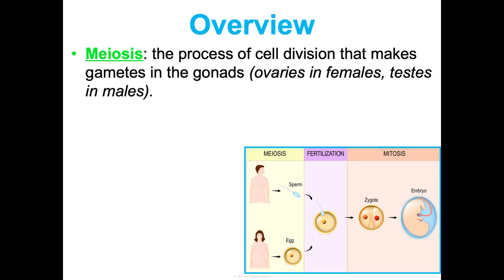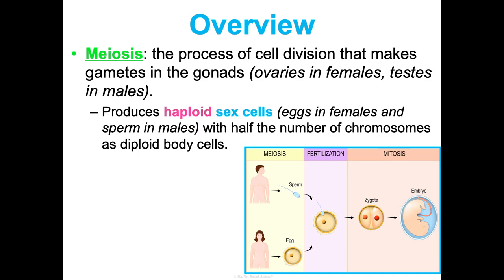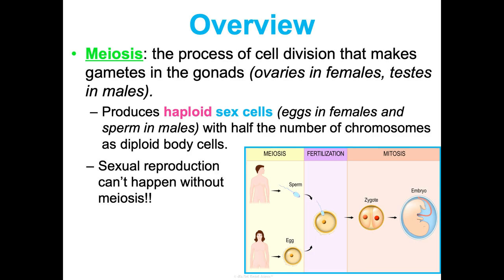Here's our overview: meiosis is the process of cell division that makes gametes in your gonads. Your gonads in females are ovaries, so this is happening in your ovaries if you're female, and in your testes if you're male. This process is going to make haploid sex cells — eggs in females and sperm in males — that have half the number of chromosomes as your diploid body cells. Sexual reproduction cannot happen without meiosis. In males, meiosis makes sperm; in females, it makes eggs. One sperm will fertilize an egg, and then that fertilized egg, now a zygote, will go through mitosis and cell differentiation to form the embryo, which we learned about in unit two.